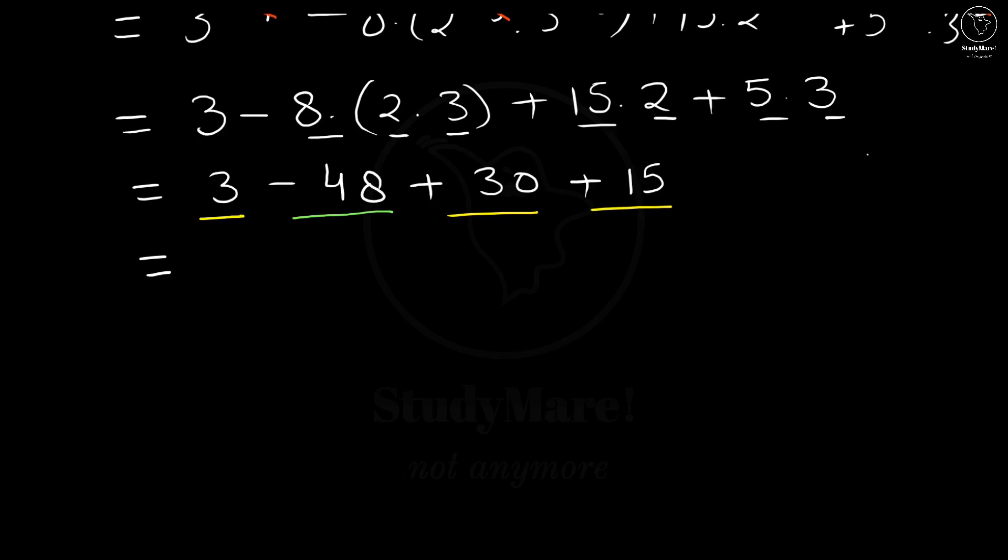So here we have 3 plus 30 plus 15 which is equal to 5, 3, 8, 3, 1, 4, that is 48. So we get 48 and we already have minus 48 which gives us 48 minus 48 as 0 and that is our answer.